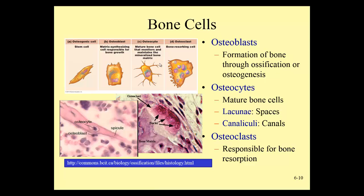Osteocytes are mature osteoblasts, and osteoclasts come from a different type of stem cell — the same lineage from which macrophages and some immune system cells differentiate, found in the bone marrow. We're mostly interested in the function of these cells: osteoblasts build bone, osteocytes maintain and monitor the bone, and osteoclasts break it down. Know what their function is in bone — that is what you need to be responsible for.